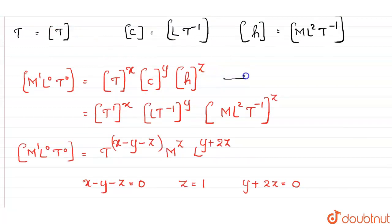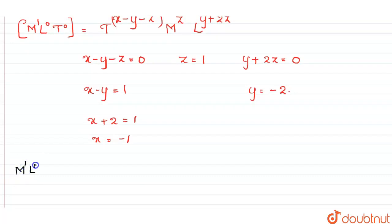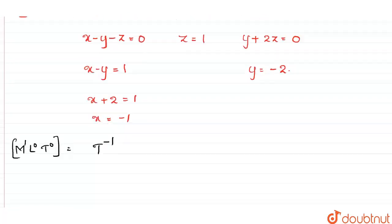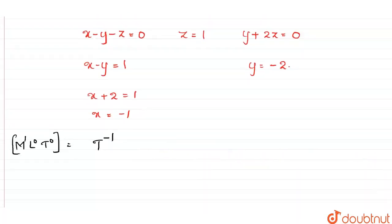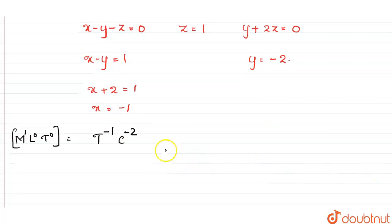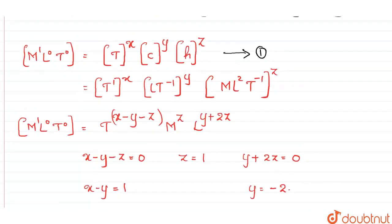Now substituting these values into equation 1, we can write M¹L⁰T⁰ = T^(-1) · C^(-2) · H^(1). So the dimensional formula of mass in terms of time, velocity and angular momentum is T⁻¹ · C⁻² · H¹.